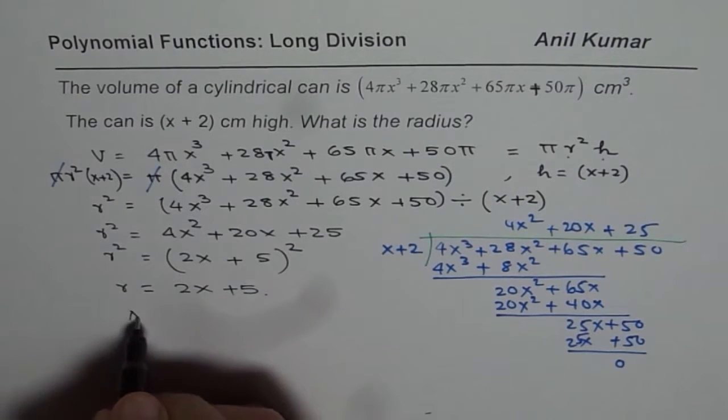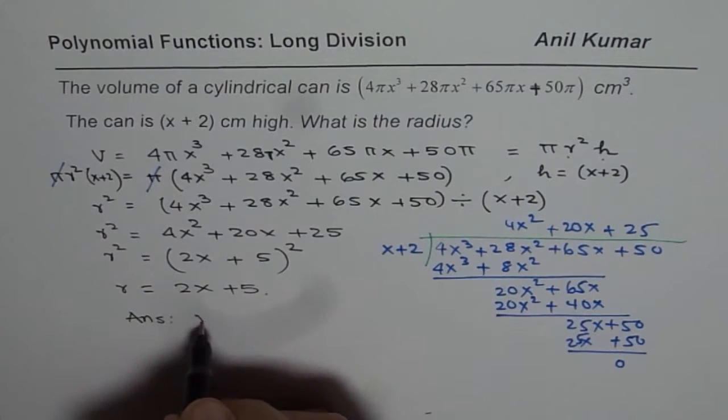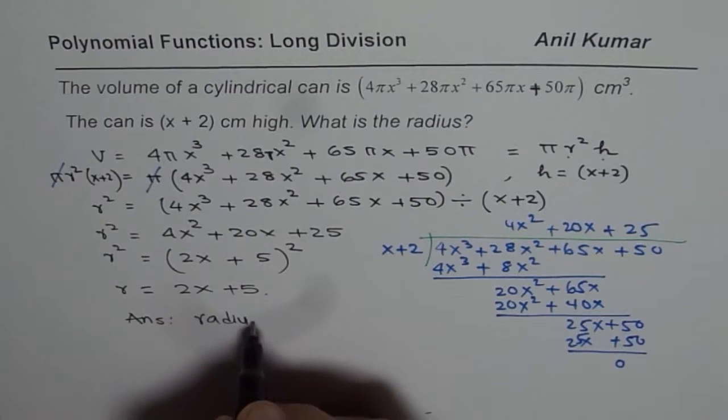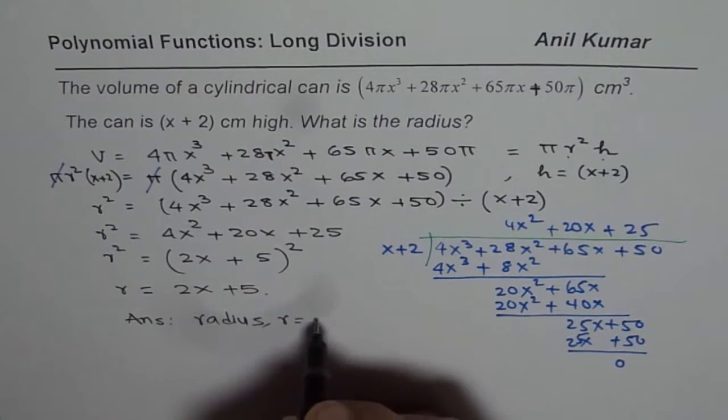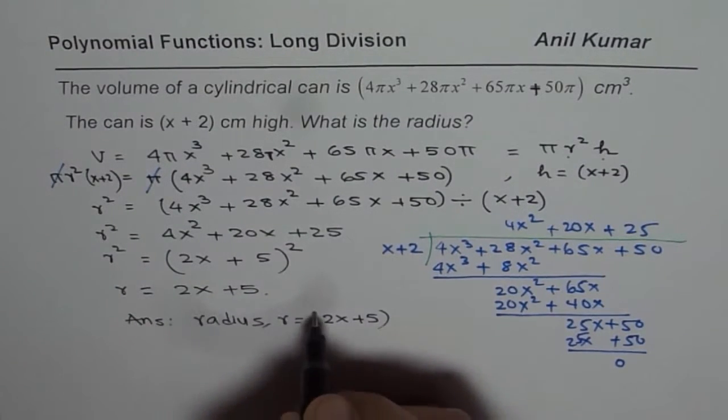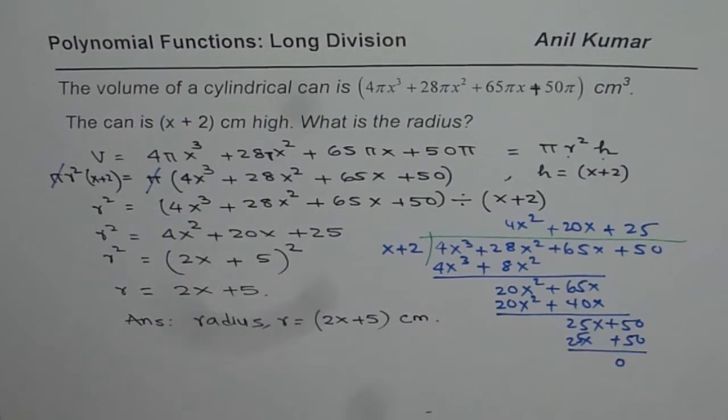And now we can write down our answer, that the radius r equals 2x + 5, the units are centimeters. So that is how you can solve such a question. I hope that helps. Thank you and all the best.